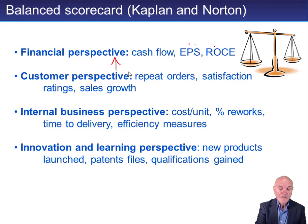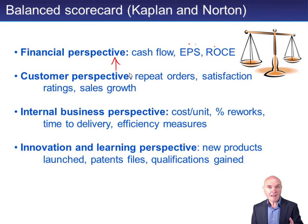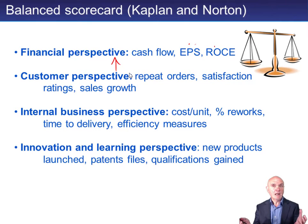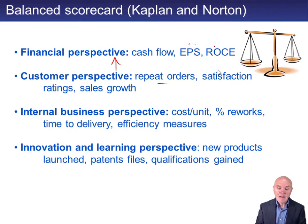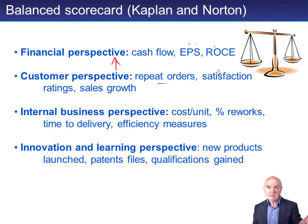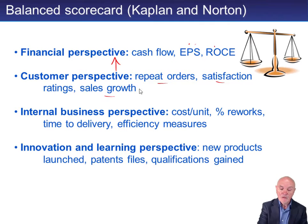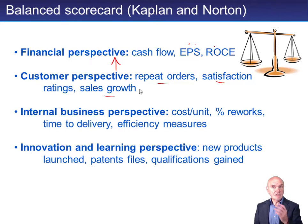Kaplan and Norton say that the immediate cause of good financial performance is happy customers — people who keep coming back, who are loyal, who increase their orders, who will pay you a good price, who will spread the good word about what a good company you are to other people who then become customers. The only source of revenue is from your customers. And if it's important to keep your customers happy, you must measure how happy they are — like repeat orders, churn rate, how often do they change to somebody else, satisfaction ratings, sales growth, referral rates.